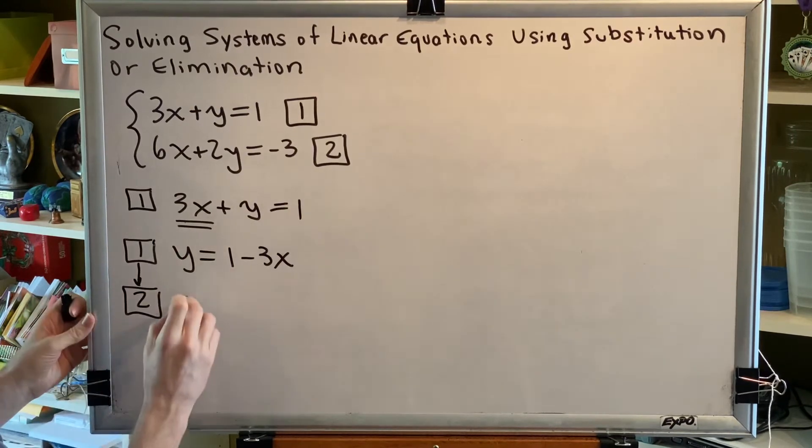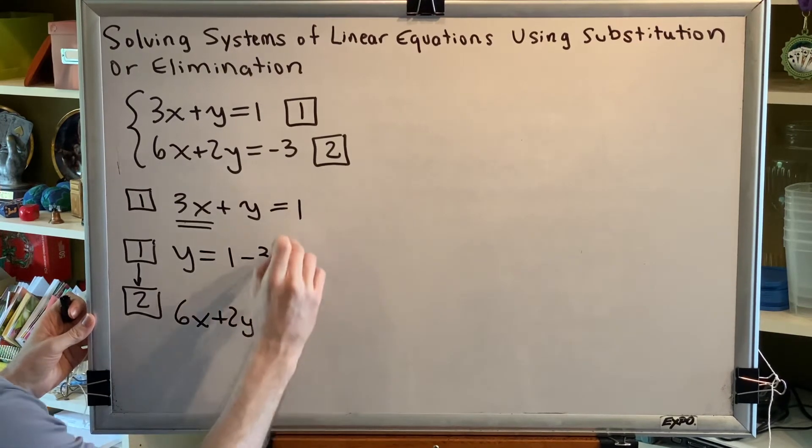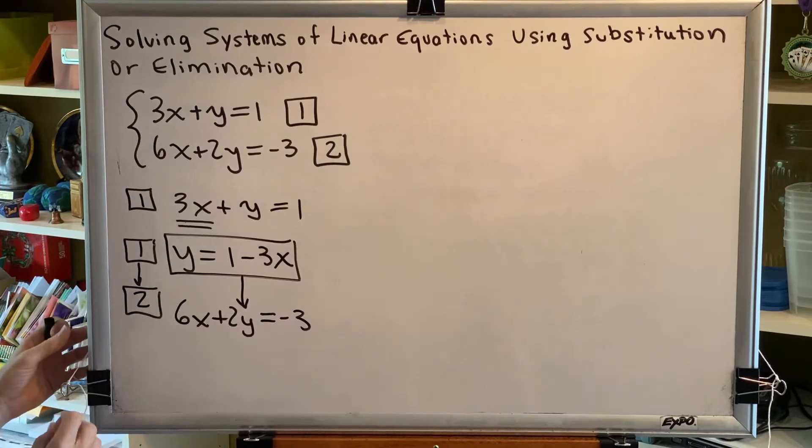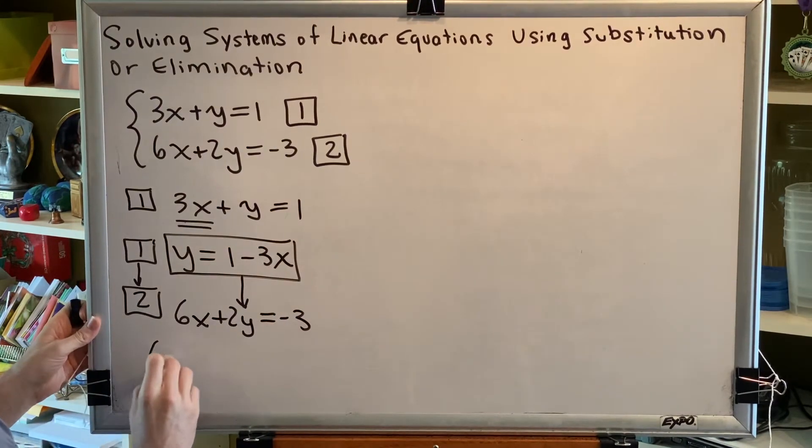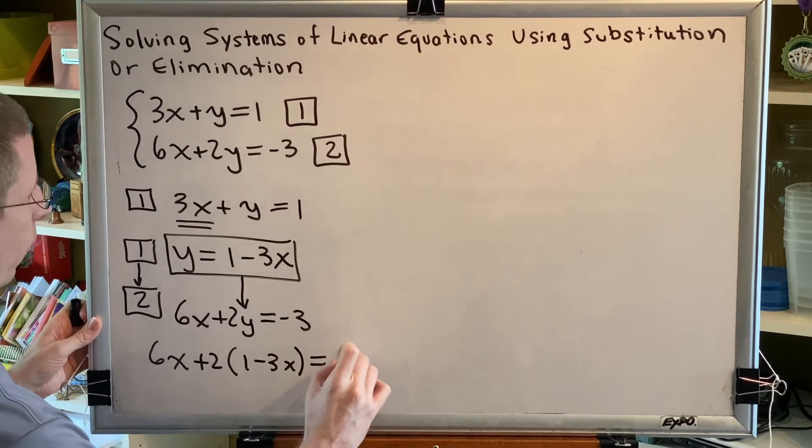So we'll write 6x plus 2y equals negative 3 and then we will substitute into that equation for the y variable. This gives us 6x plus 2 times the difference 1 minus 3x equals negative 3.